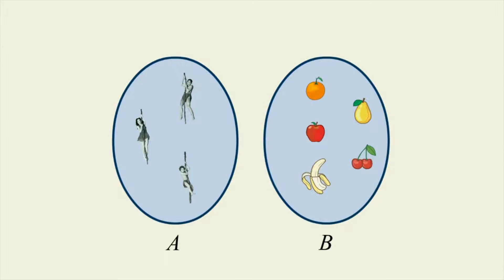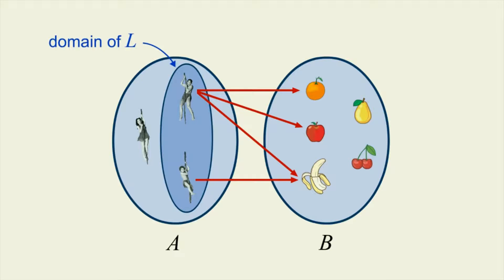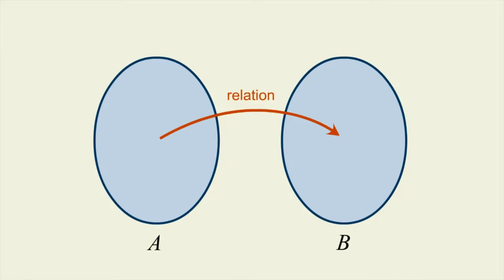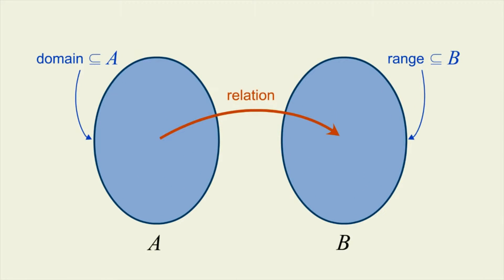In a binary relation, not every element in the two sets which are related may be involved in the relation. In our example, Tarzan, Boy, oranges, apples, and bananas are part of relation L, while Jane, pears, and cherries are not. The set of all elements of A which are L-related to elements of B is called the domain of L. Likewise, the set of all elements of B to which the elements of A are related is called the range of L. So in a binary relation from A to B, all the elements of A which are related form the domain, and all the elements of B which are related form the range. The domain and range are subsets of A and B, and can include every element or just a single element.